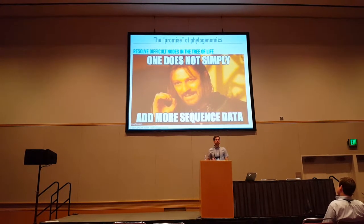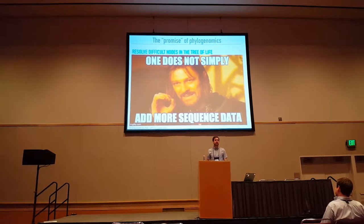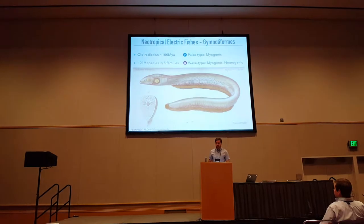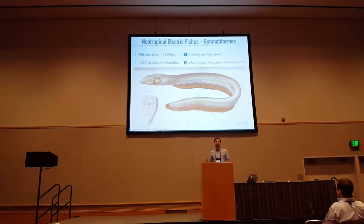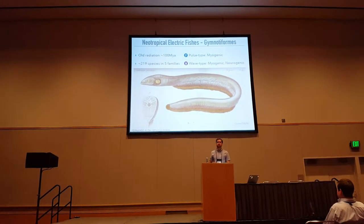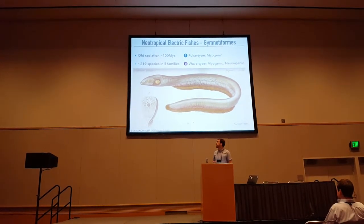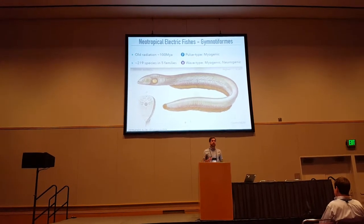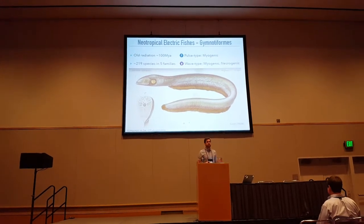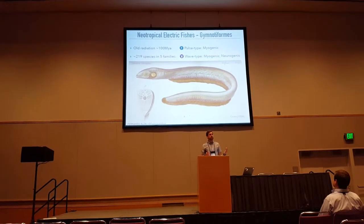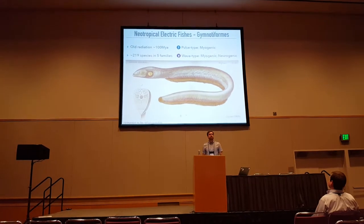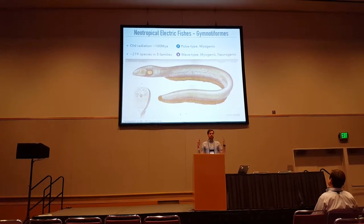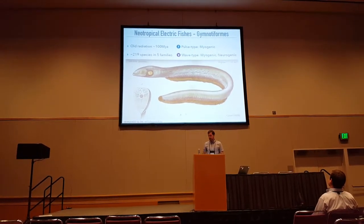Some of these most difficult nodes are those characterized by ancient and rapid radiations. As an illustration, I'll show an example of the Gymnoliforms, which are a clade of tropical freshwater fish that radiated about 100 million years ago.